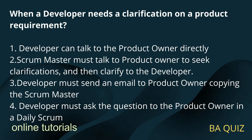Question number 1: When does a developer need clarification on a product requirement? Option 1: The developer can talk to the product owner directly. Option 2: Scrum master must talk to the product owner to seek clarifications and then clarify to the developer. Option 3: The developer must send an email to the product owner copying the scrum master. Option 4: Developer must ask the question to the product owner in a daily scrum.